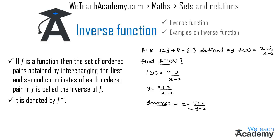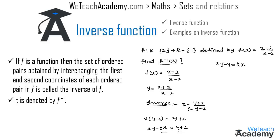Cross multiplying gives x(y minus 2) = y plus 2. Expanding, xy minus 2x = y plus 2. Transferring y to the left-hand side and minus 2x to the right-hand side, we get xy minus y = 2x plus 2.